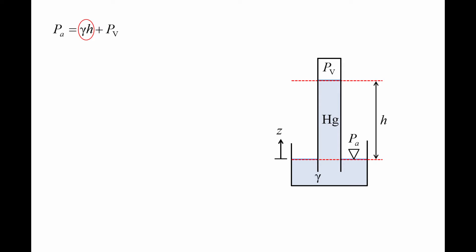while a water barometer would have a column height of over 10 meters. So it is much more practical to have a barometer that uses mercury instead of a barometer that uses water.